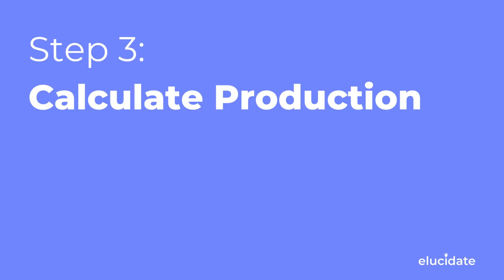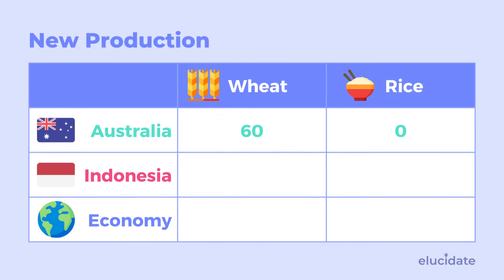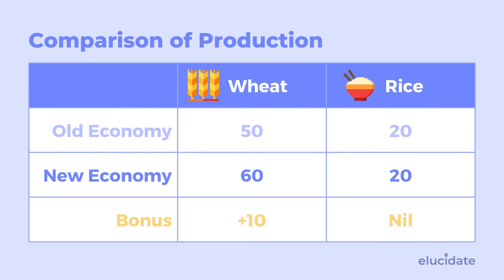Step three: calculate production. Following our comparative advantage, Australia should produce nothing but wheat and Indonesia should produce nothing but rice. Australia is now producing 60 units of wheat and zero rice, and Indonesia is now producing zero wheat and 20 units of rice. Our total economy now has 60 units of wheat and 20 units of rice. Compared to our old economy of 50 units of wheat and 20 units of rice, our rice has remained the same but we've gained an extra 10 wheat.